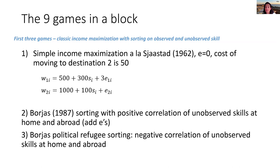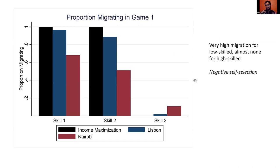Even in this very simple setting, we already see some subjects performing differently from income maximization. These are young, economics-trained students whom we would expect to conform to the theory, yet deviations are observed. We now add real-world features to see what happens.